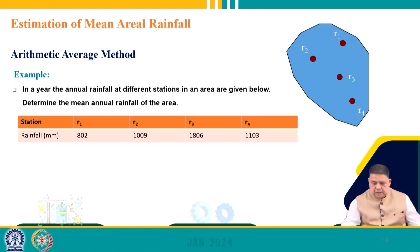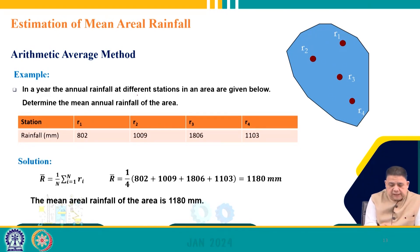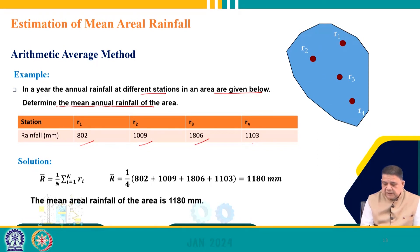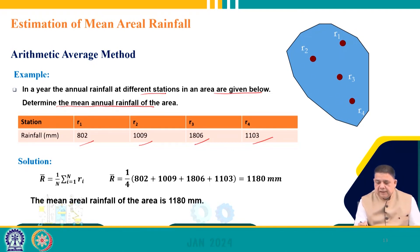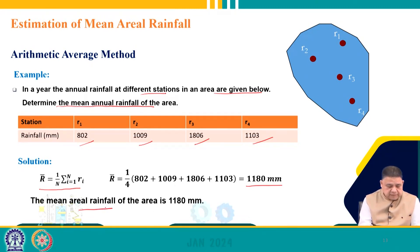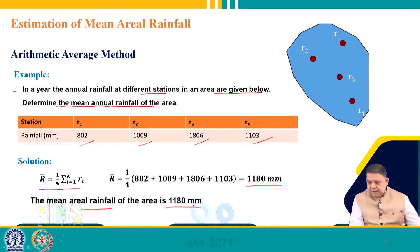The arithmetic average method is applicable when the area is hydrologically homogeneous and the rain gauges are uniformly distributed over the catchment. R̄ = (1/N) × Σ Rᵢ, where R̄ is the mean aerial rainfall and Rᵢ is the rainfall at station i. For example, with 4 stations recording 800, 2009, 1806, and 1103 mm, the mean annual rainfall is (800 + 2009 + 1806 + 1103) / 4 = 1180 mm.